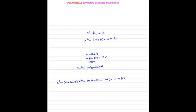This is the very important formula as far as cubic polynomials are concerned. Now, the second question: find a cubic polynomial with the sum, the sum of the product of its zeros taken two at a time, and the product of the zeros as 2, minus 7, and minus 14 respectively.